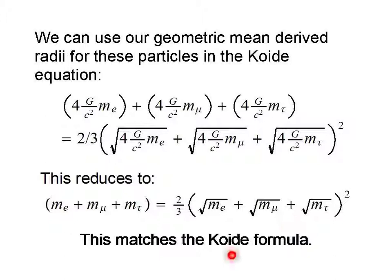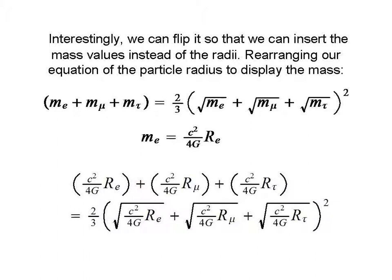Interestingly, or expectedly, we can flip it so that we insert the mass values instead of the radii, rearranging our equation of the particle radius to display the mass as such, and inserting this term in place of the masses, we get this.